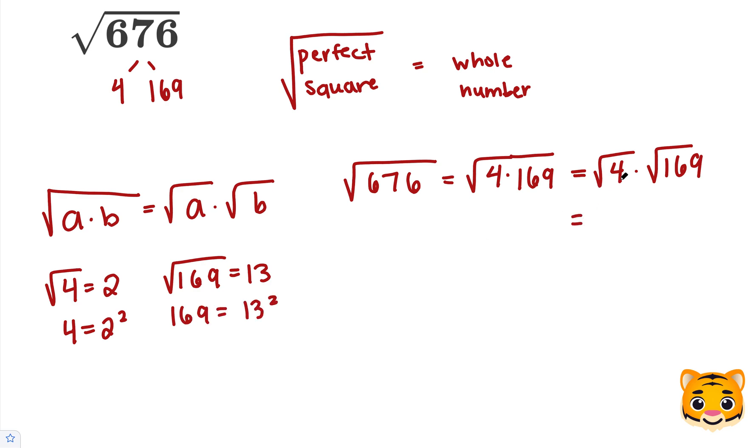So we can rewrite the square root of 4 as 2 and we can rewrite the square root of 169 as 13. Therefore, our answer is 2 times 13, which we can simplify to 26. So the square root of 676 is equal to 26.